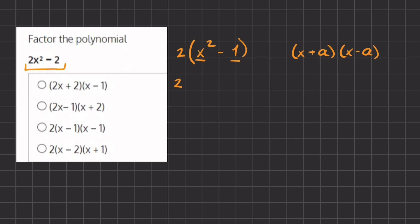So our a is going to be this 1. We have x squared minus our a, which is 1, squared. So when we factor this, we have 2 on the outside, and we have x plus 1 and x minus 1, because our a is 1.